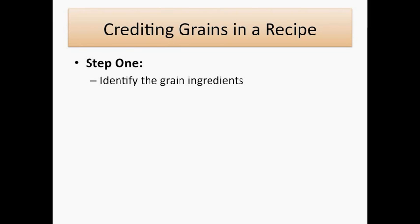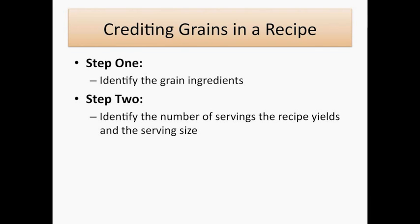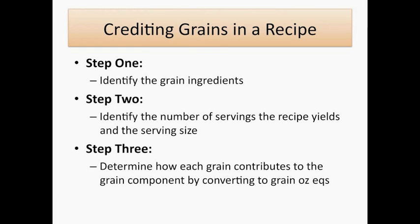The first step of the process is to identify the grain ingredients within the recipe. The second step is to identify the number of servings that the recipe yields. Step 3 is to determine how each grain contributes to the grain component by converting the grain to grain ounce equivalents.